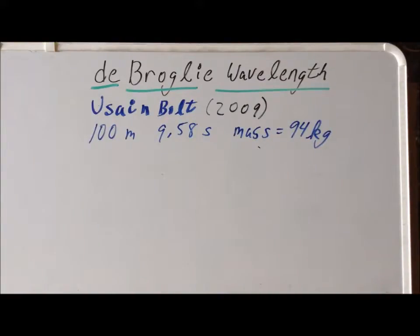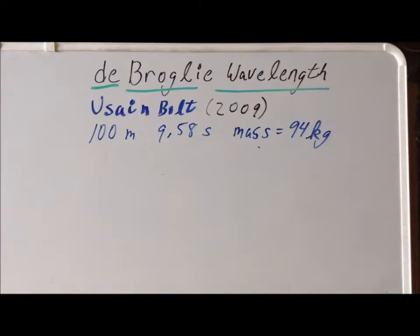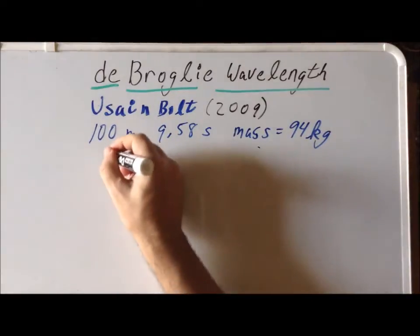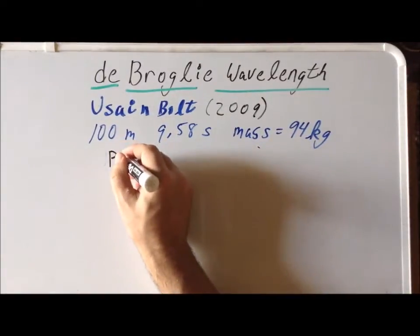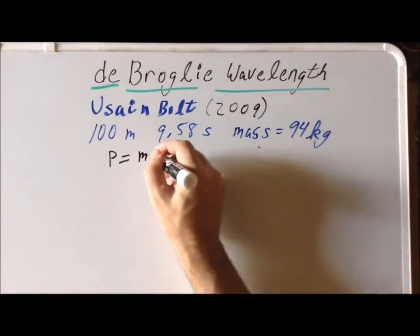The first thing that we need to do is to calculate his momentum during this particular race. To calculate the momentum of a macroscopic object, we use the formula p equals m times v.